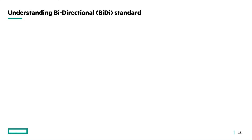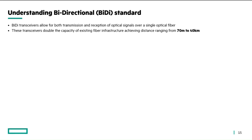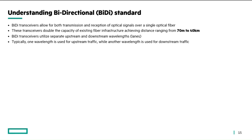Now let's understand bi-directional transceivers, also known as bi-di transceivers. Bi-di transceivers allow both transmission and reception of optical signals over a single optical fiber, making the best use of your existing fiber infrastructure while supporting distances ranging from 70 meters to 40 kilometers. Bi-directional transceivers utilize separate upstream and downstream wavelengths, also known as lanes — one wavelength for sending data and the other wavelength for receiving data over that same fiber thread.